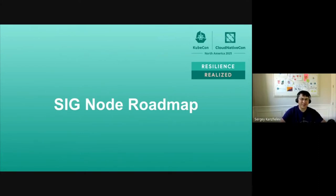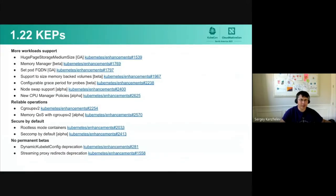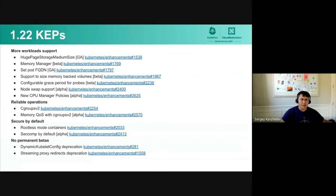Let's talk about the SIG Node roadmap. We already did a talk in May about the roadmap and what we planned for the 1.22 release. I wanted to refresh and tell you what we actually delivered in 1.22 in terms of KEPs. KEP — Kubernetes Enhancement Proposal — is our way in Kubernetes to track features and improvements. We track all KEPs through different stages, and this list shows KEPs that we've been working on in 1.22 that were actually merged. I tried to split KEPs into themes, though it's really hard — a theme is not an attribute of a KEP, it's just our way to group them.